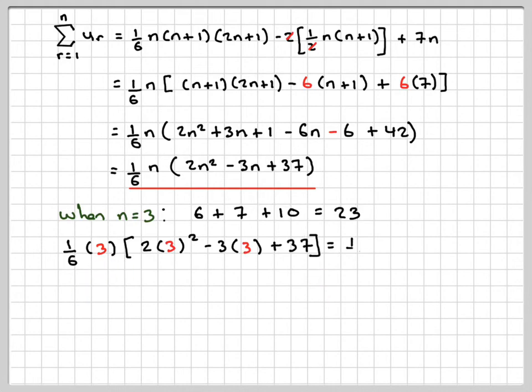That cancels out, so we get a half. 3 squared is 9 times 2, which is 18, minus 3 times 3, which is 9, plus 37. And then we're going to get a half times 18 minus 9 is 9, 9 plus 37 is 46, 2 goes into 46, 23.